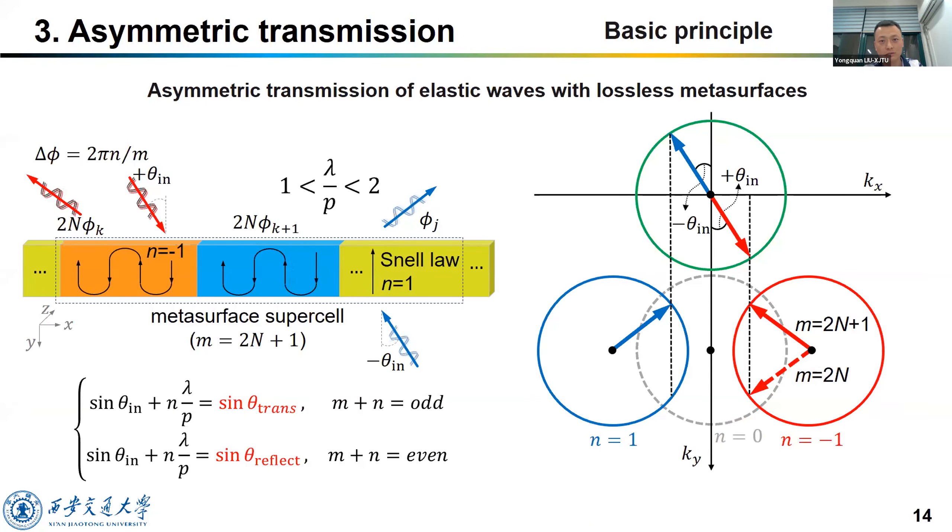This is our principle based on the modified GSL. We try to let the diffraction order equals plus one and minus one only. And then by choosing the number of unit cells as odd numbers, like three, we can let the wave from both directions go upside all the time. As a result, the waves can reflect from the positive side, but transmit from the negative side. Note that we don't need any lossy materials.